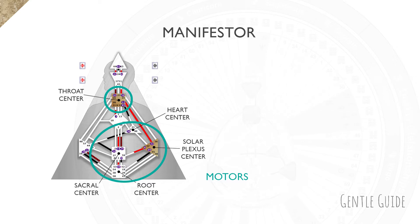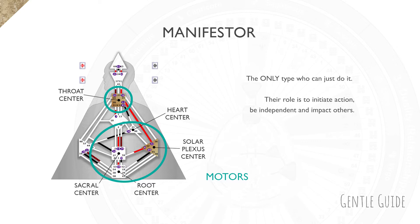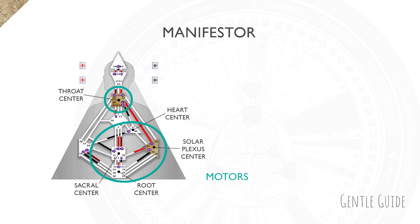A direct or indirect connection between motors and throat makes them the only type who can just do it. Their role is to initiate action, be independent, and impact others — they don't need anyone's permission, they can just go and do it. To do that without the resistance of others, it's so important that they follow their strategy.